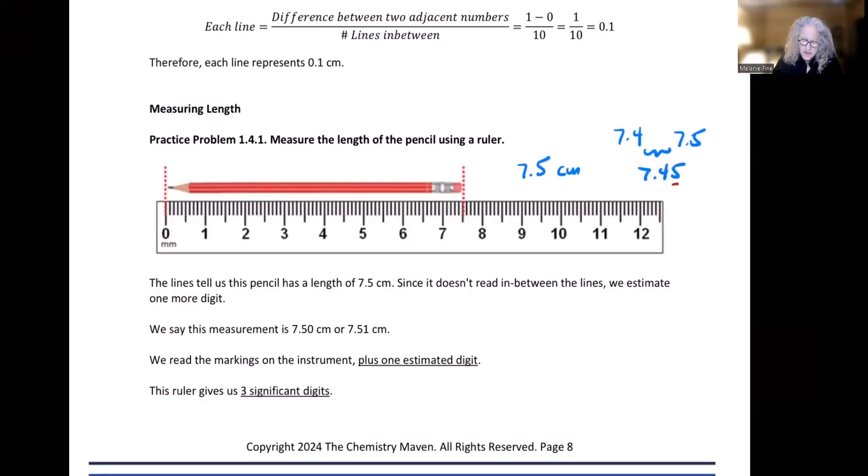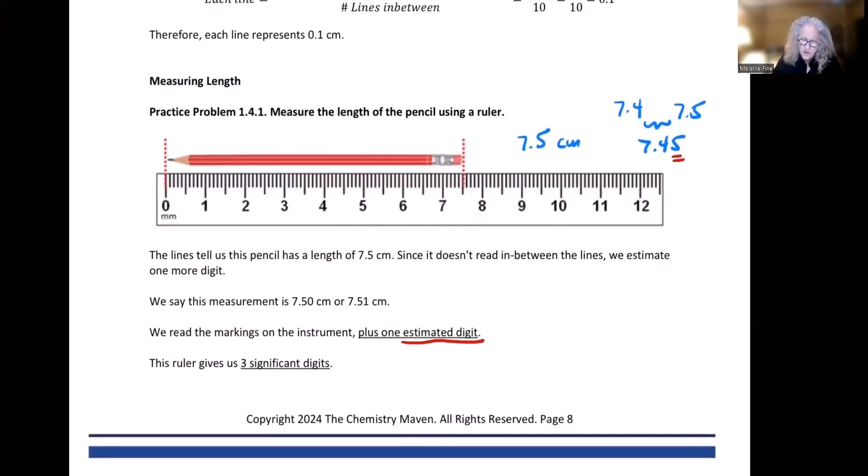We always estimate one digit past what the lines represent. So since this is exactly on the line, or at least I see it as exactly on the line, I still have to take a measurement with that one estimated digit. So I wouldn't record 7.5 centimeters. I would record 7.50 centimeters because it has one additional estimated digit. You always take what each line represents and add one placeholder to the right. That last digit is estimated. It's really in the eye of the beholder, as long as it's a reasonable estimate. So we say that this ruler, which gave us this measure of 7.50 centimeters, gives us three significant digits.